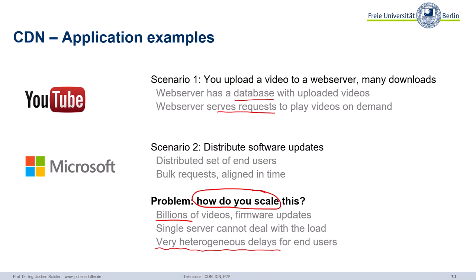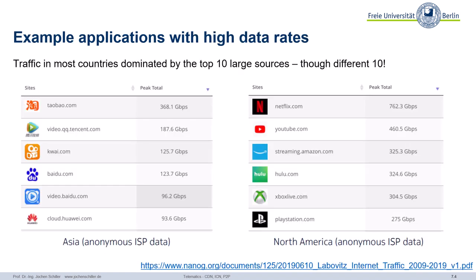So what are some examples with very high data rates? Here you see two tables — one in Asia collected at an ISP, showing the typical web pages and applications and the traffic they generate, and on the right-hand side, North America, you see Netflix, YouTube, etc. You see the traffic rates are already quite high. This is for the video example. So what to do? Definitely not a single server, not a server farm in one location, but a so-called content delivery network.